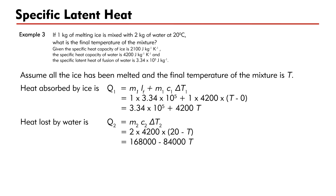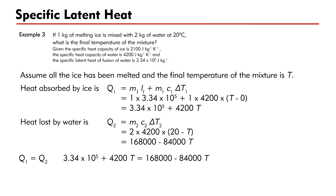Assuming no heat is absorbed from the surroundings, by conservation of energy Q₁ = Q₂, we have 3.34×10⁵ + 4200T = 168,000 − 8400T. Solving gives 88,200T = −166,000, so T = −1.88 degrees Celsius.